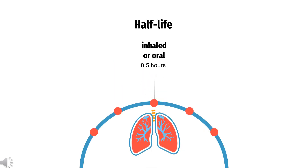Half-life: Following intravenous administration, the half-life of beclomethasone dipropionate was 0.5 hours, while the half-life of the active metabolite 17-BMP was 2.7 hours. Following oral and intranasal administration, the half-life of 17-BMP was 8.8 and 5.7 hours, respectively.